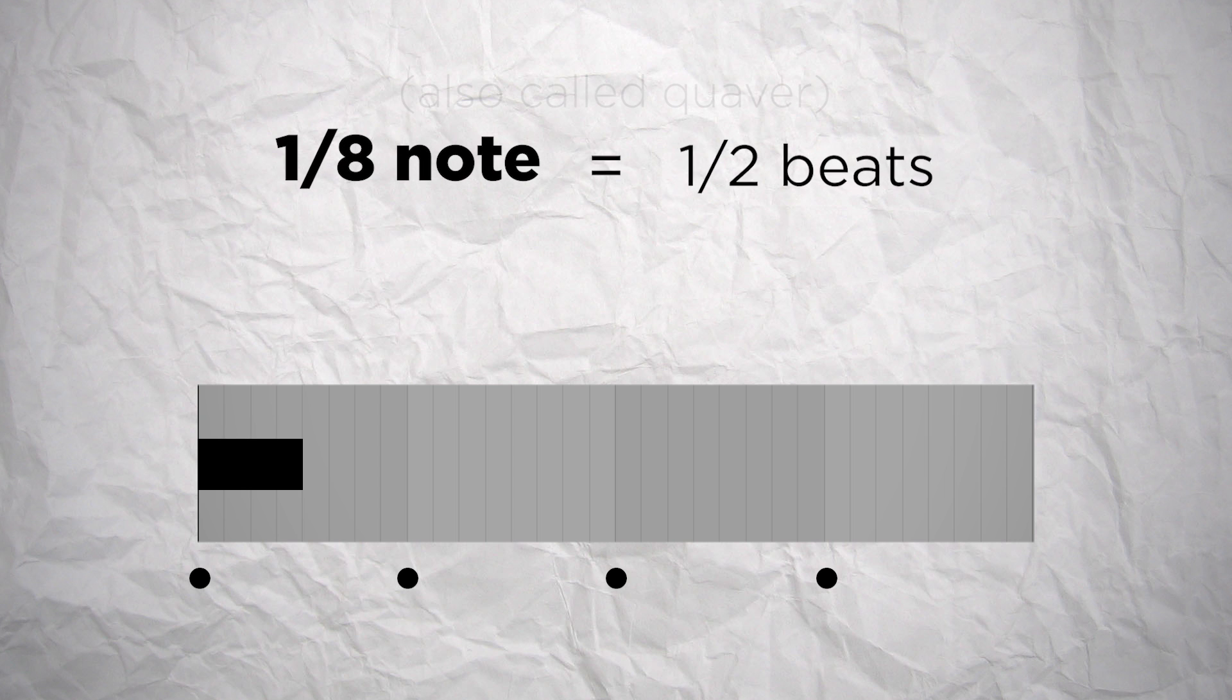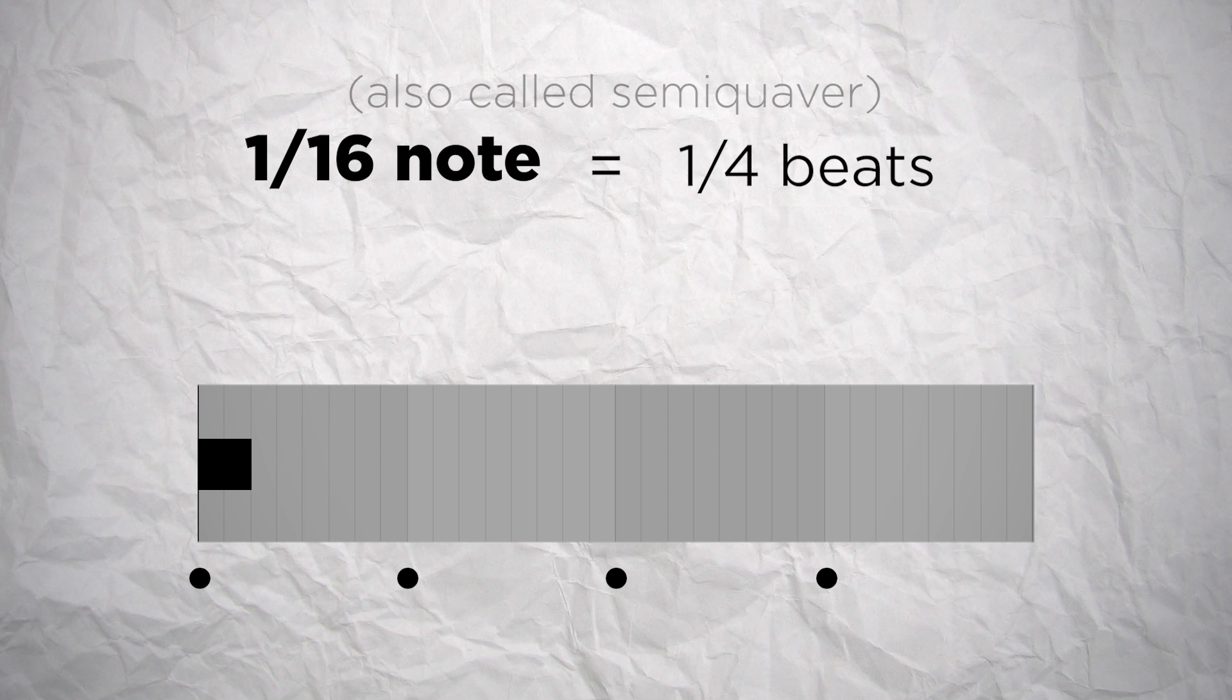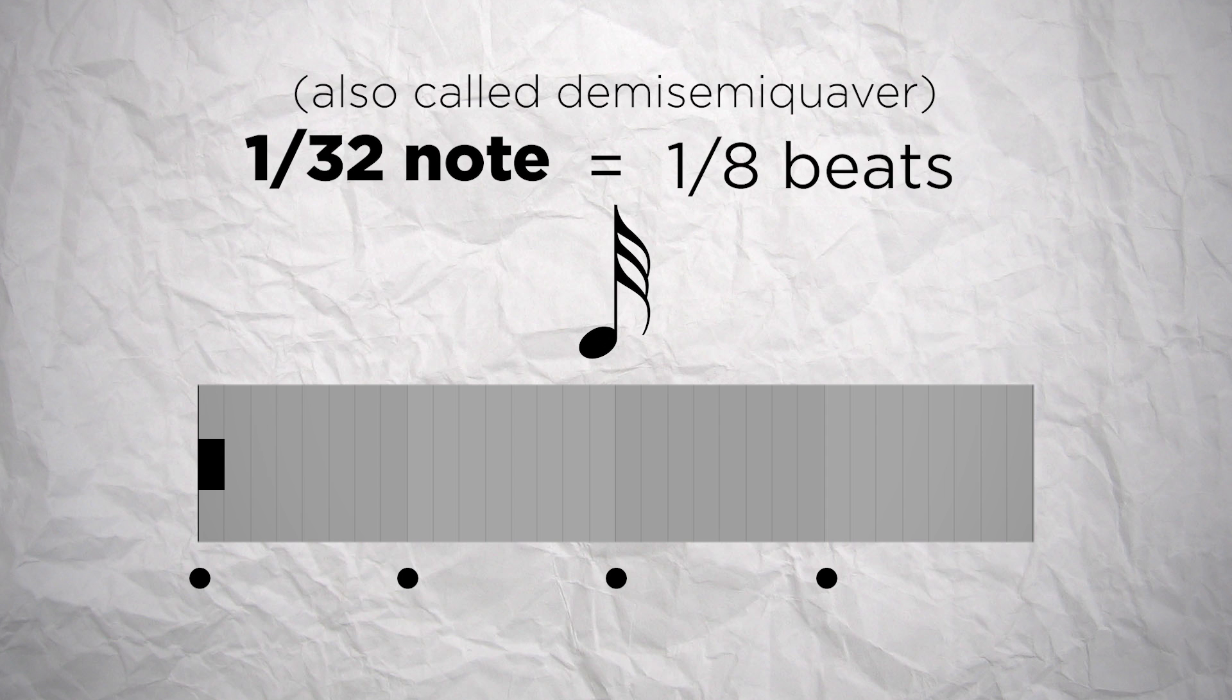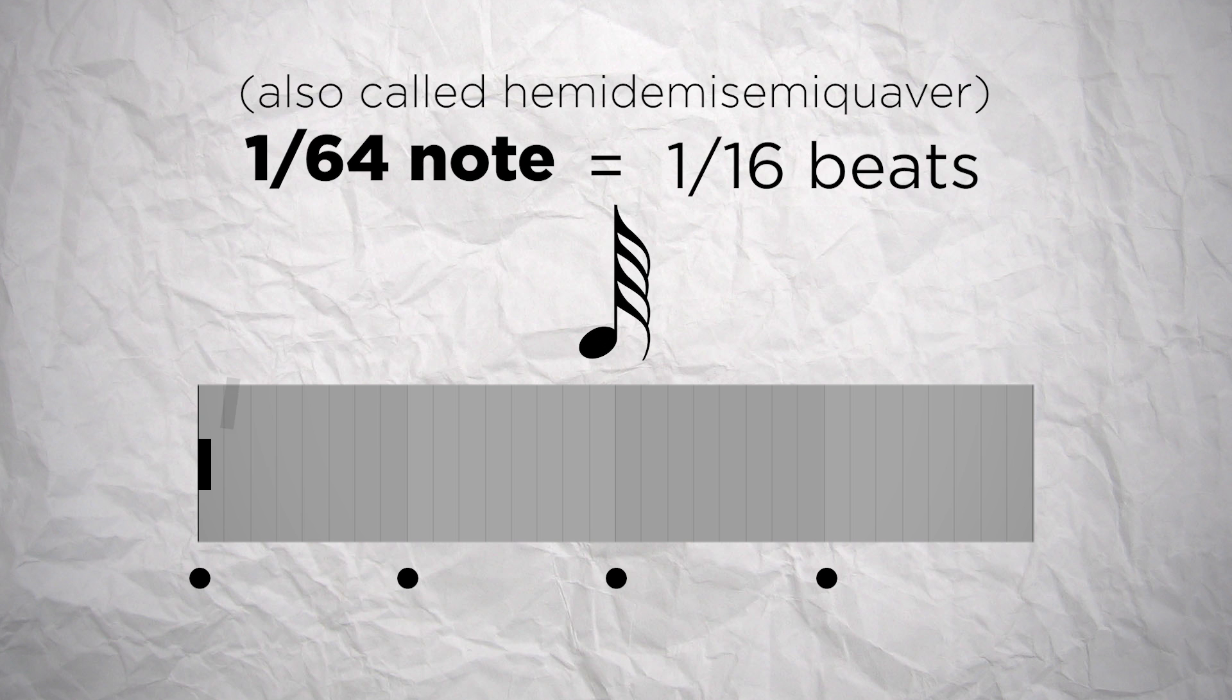If we divide this one by 2, we have an 8th note, which lasts for half a beat, and is noted as a black note with a hook. Divided by 2, we have a 16th note, which is as long as the quarter of a beat, and is noted as a black note with 2 hooks. And then you can go on dividing the length of these notes again and again, dividing their length by 2 every time and adding a hook every time.